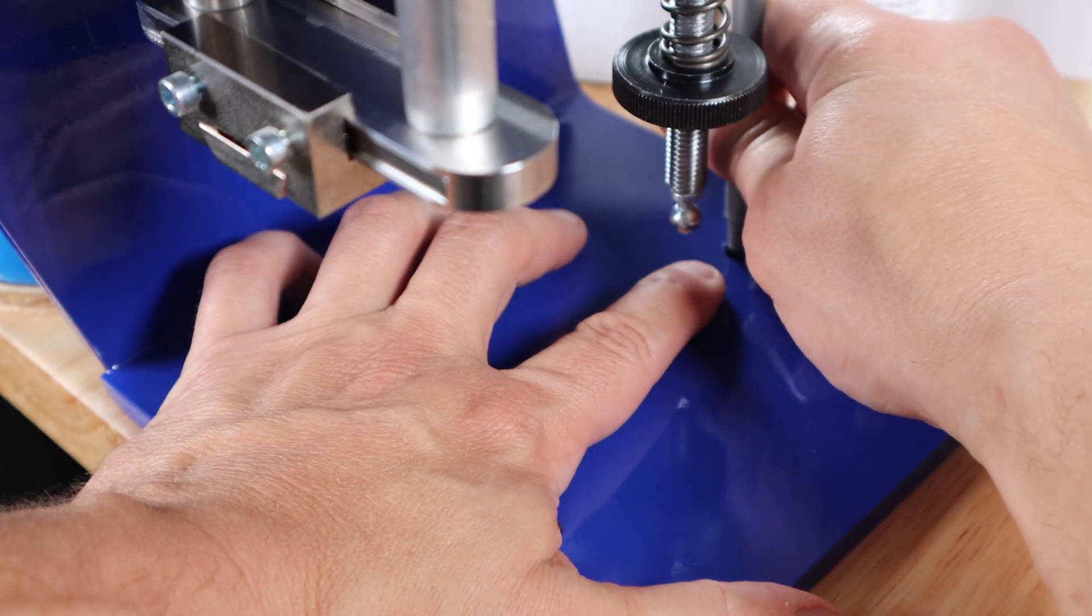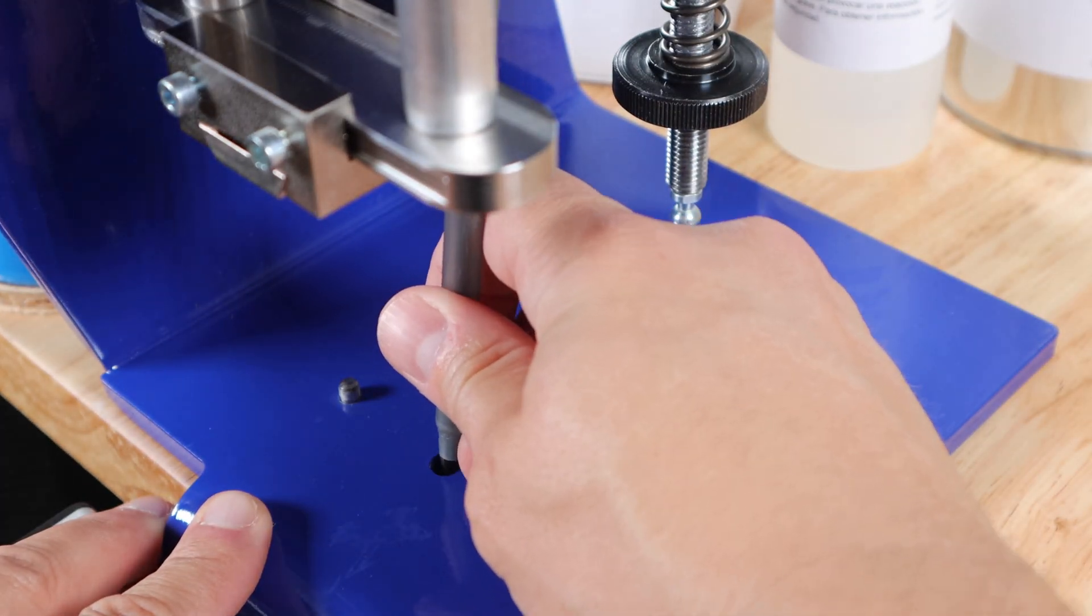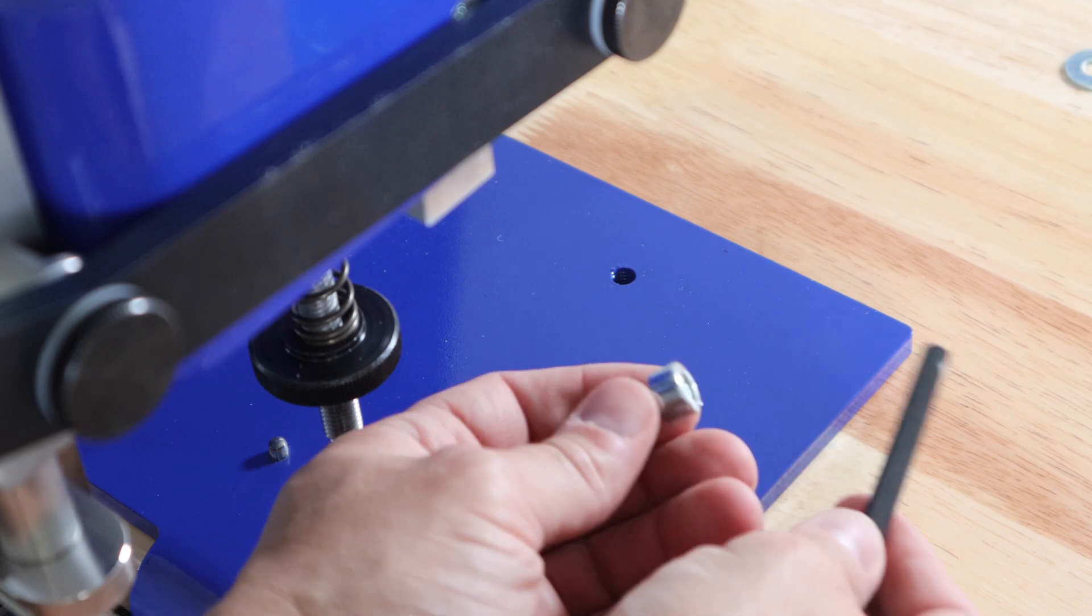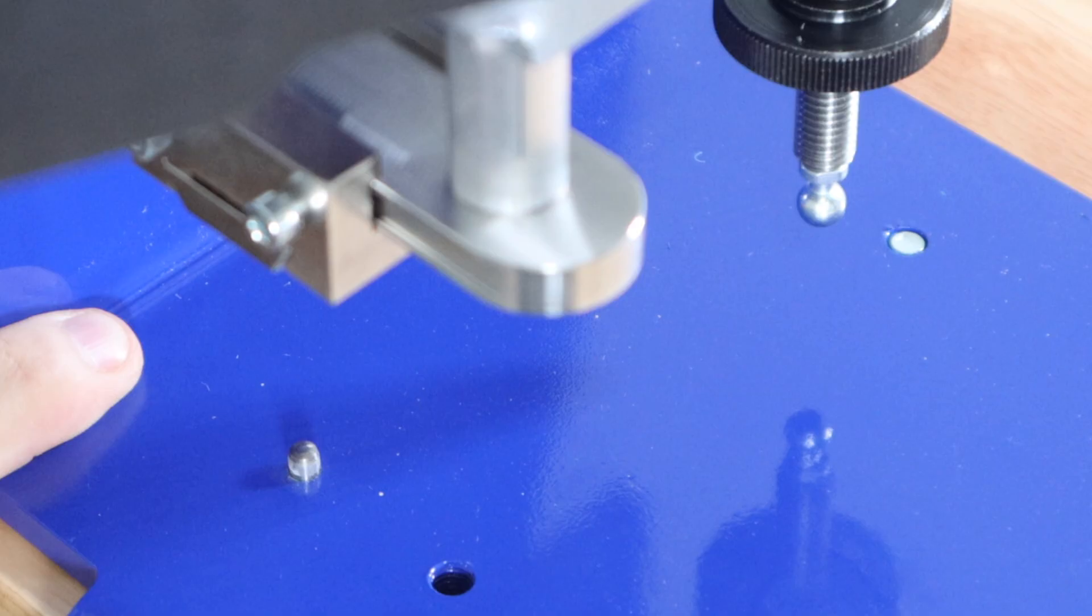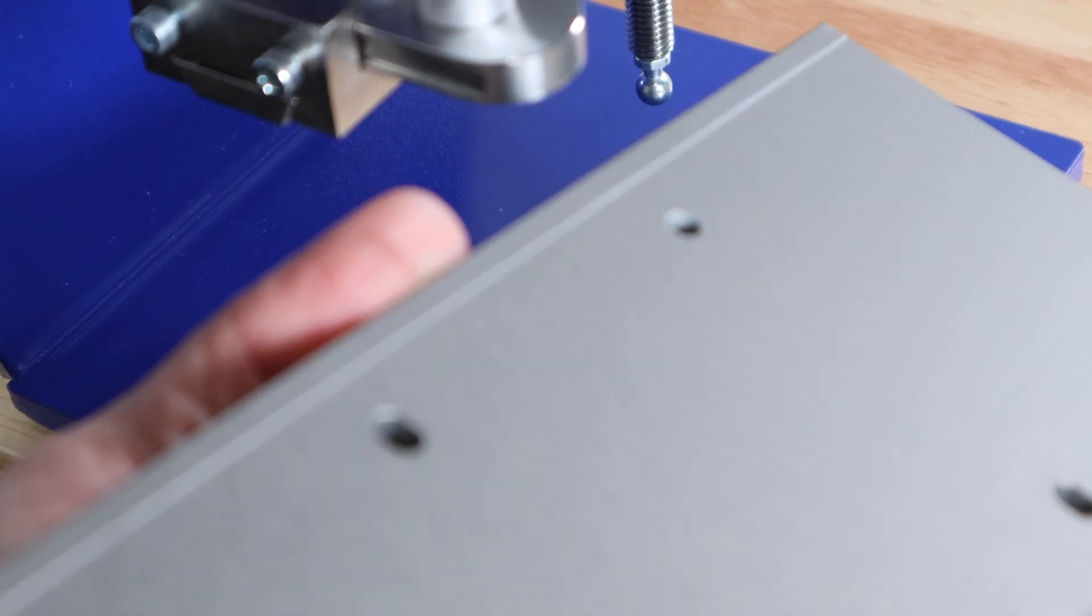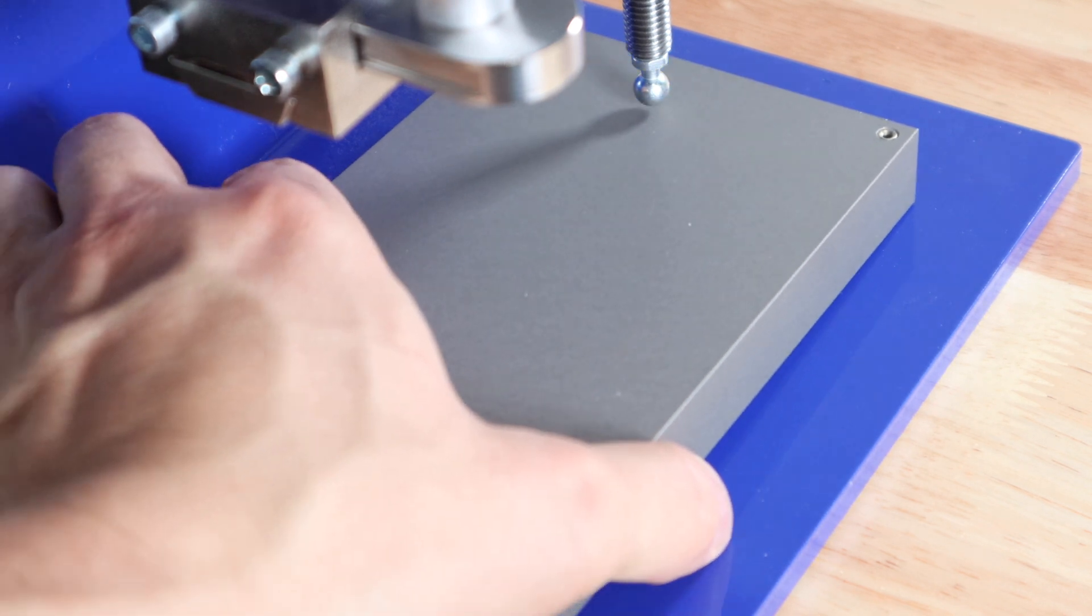To begin we mark the two holes we will use to mount the HP90. Using a one quarter inch drill bit we drill into the table. From the underside we screw the machine into the table stopping where the bolt is flush. The reason for this is because the base plate will sit flush with the machine.